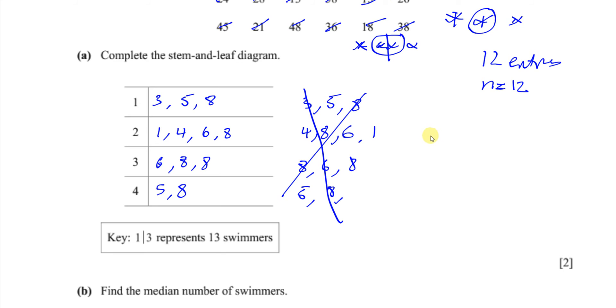One of the ways of doing it is use n plus 1 divided by 2, which will tell you where the median is, not what it is, but where it is. So that's going to be 12 plus 1, which is 13, divided by 2, which is the 6.5th entry. That means, if it says 6.5, what it means is it's between the 6th and the 7th entry. So we're looking for the 6th entry and the 7th entry.